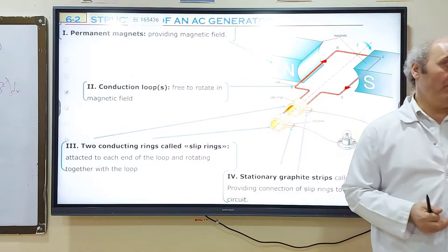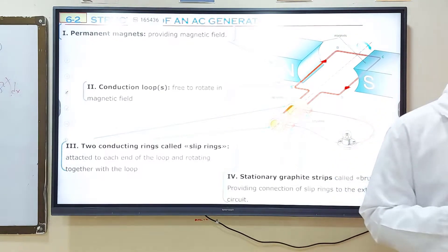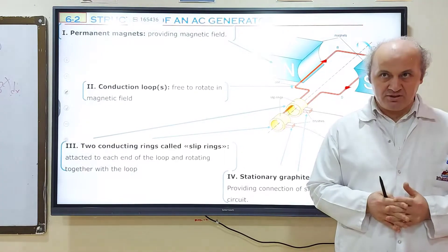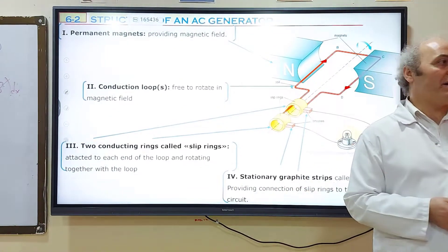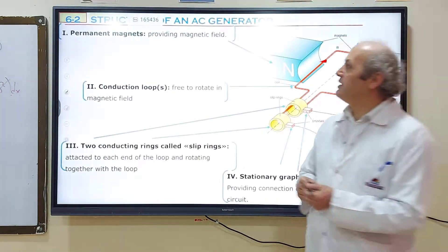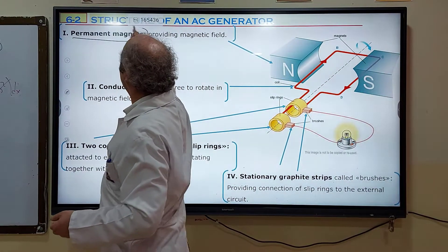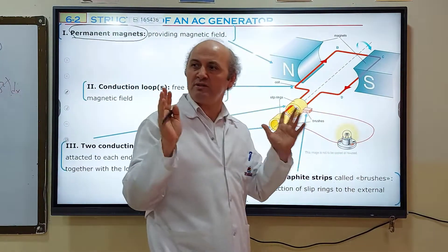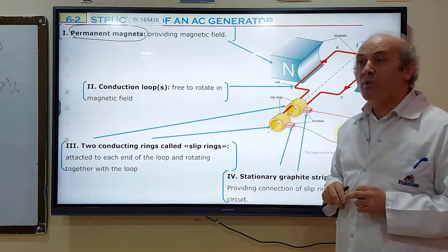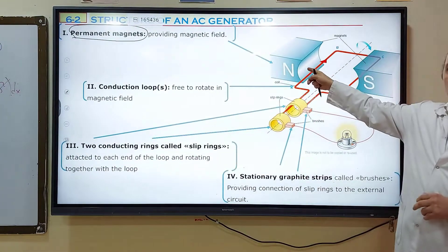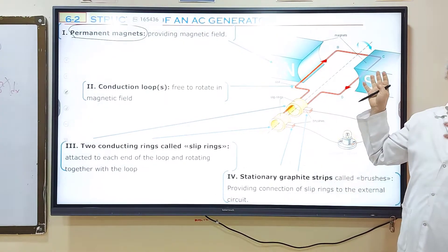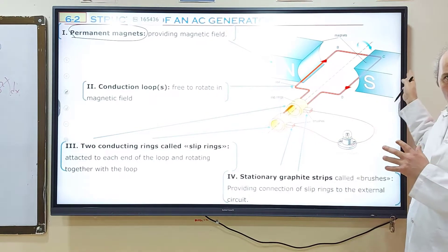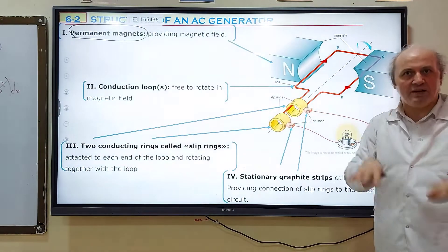Of course, we need a magnetic field. Without a magnetic field, there is no change in magnetic flux. Magnetic field is provided by a permanent magnet — one that is natural and will maintain a constant magnetic field. As you can see, the magnet has an N pole and S pole, and the magnetic field lines run from N to S. The coil will be placed inside this magnetic field.